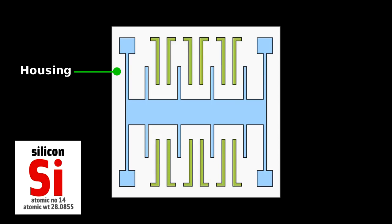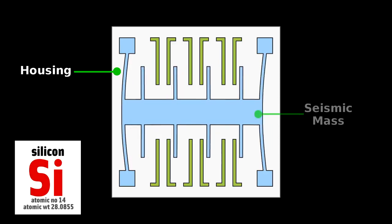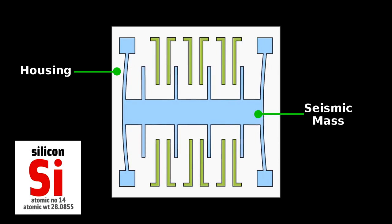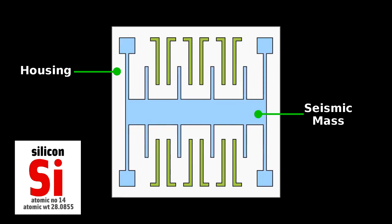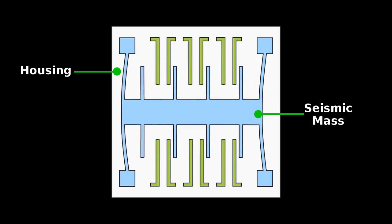It has a housing that's fixed to the phone, and a comb-like section that can move back and forth. That's the seismic mass equivalent to the ball. The spring in this case is the flexibility of the thin silicon tethering it to the housing.